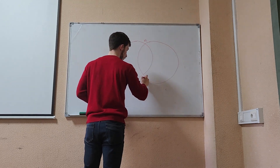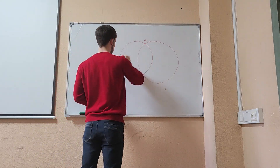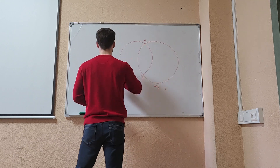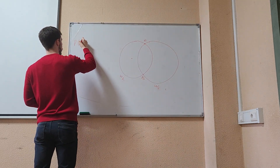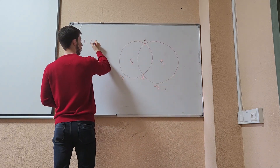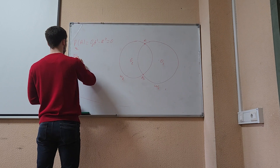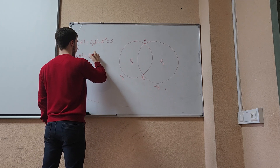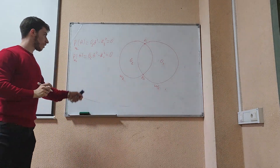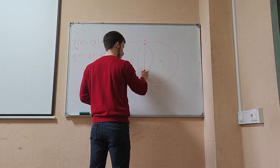Let's prove that line AB is the radical axis of two intersecting circles omega 1 and omega 2. For point A, the power with respect to omega 1 is O1A squared minus R1 squared, which clearly equals 0. And the power of A with respect to omega 2 is O2A squared minus R2 squared, which is also equal to 0. Similarly, we can prove the power of B with respect to omega 1 and omega 2 is also 0. So line AB is their radical axis.